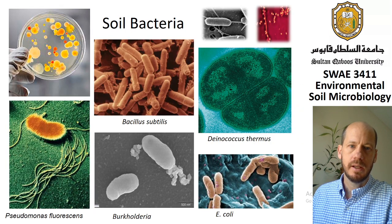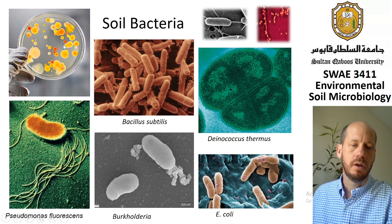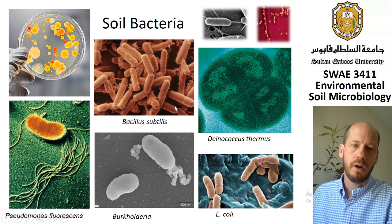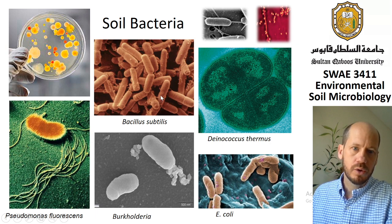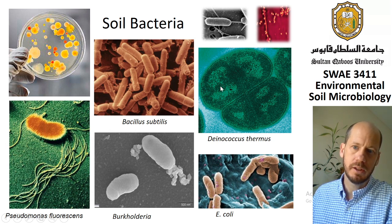Today's class is about soil bacteria. You can see some images of how they look on the plates when we grow them in the lab — you've already seen this in your lab practicals. Also some microscopy showing how diverse bacteria look under the microscope. It's very hard to observe these differences in a normal light microscope because bacteria are usually very small organisms, but under electron microscopy you can see their shapes and different features much better.